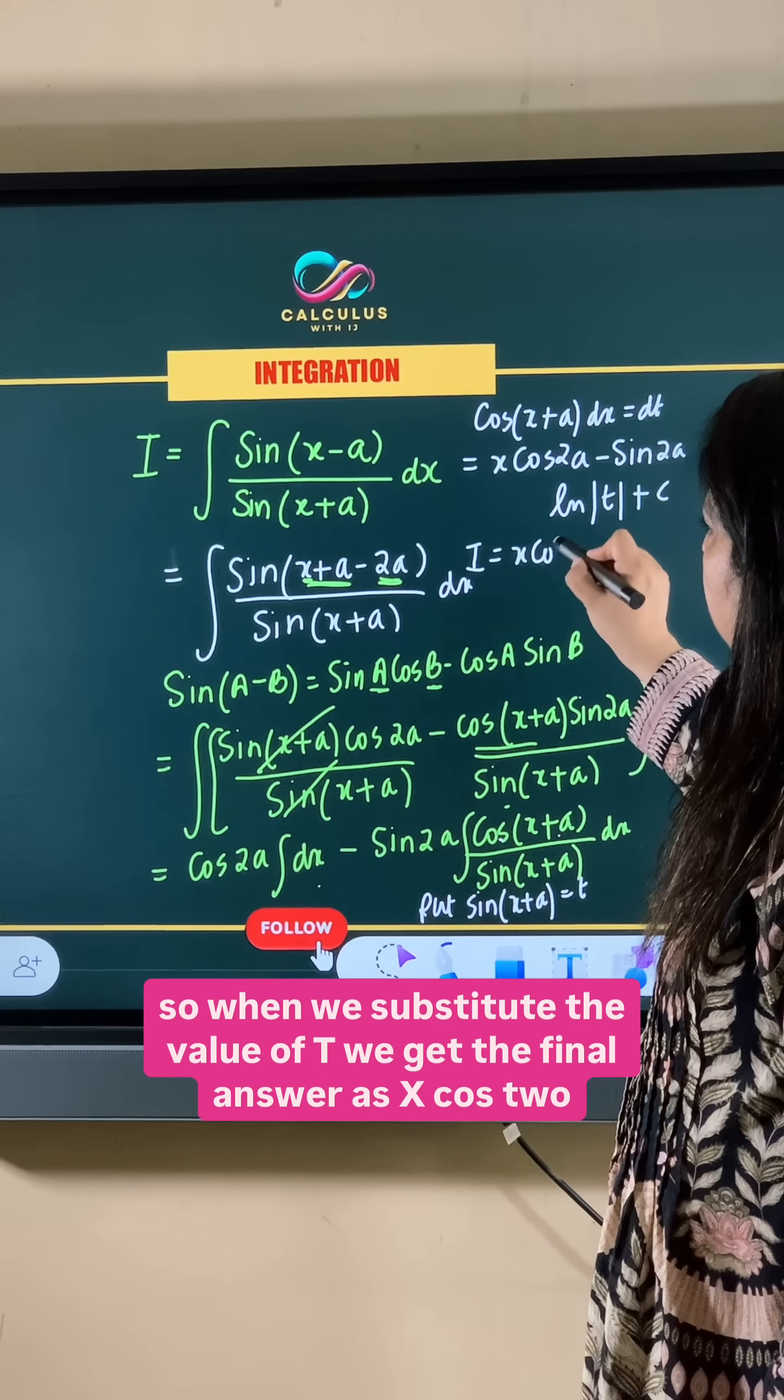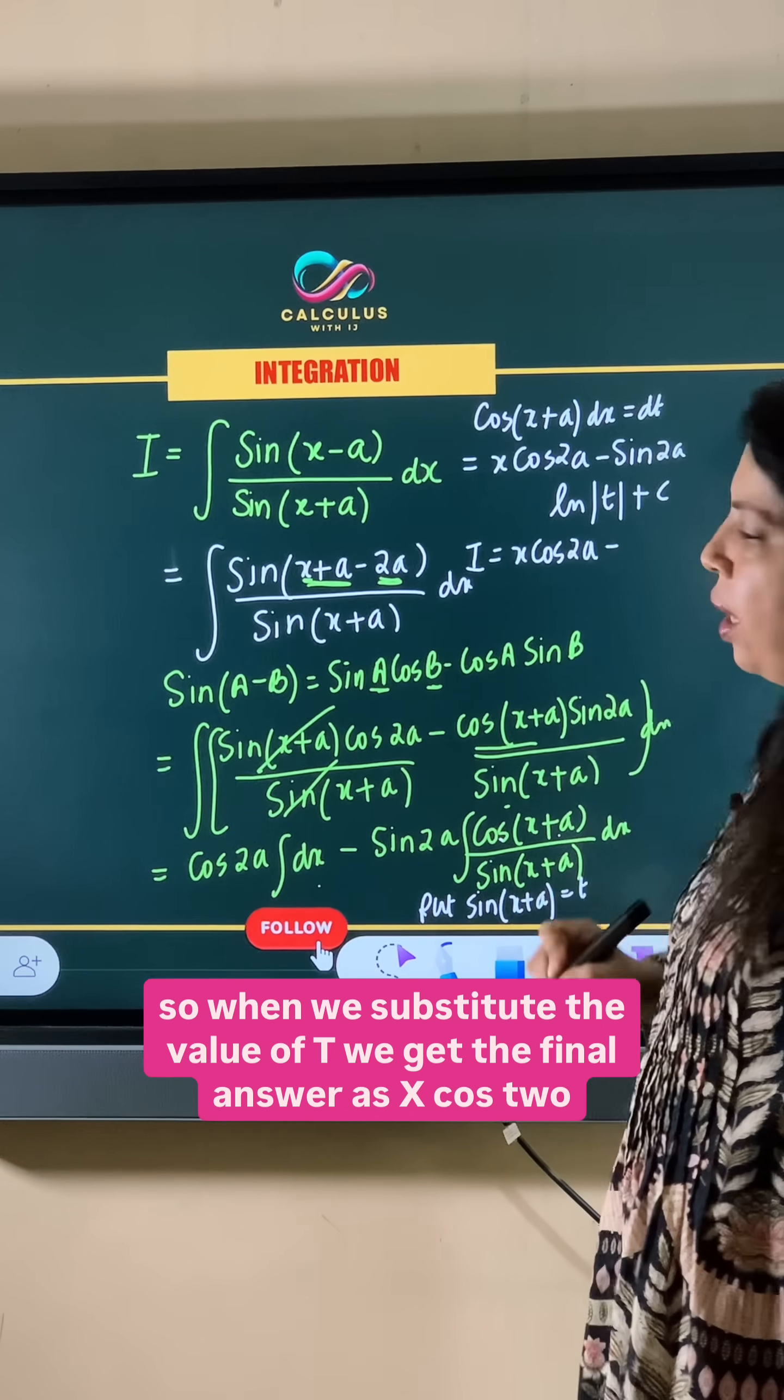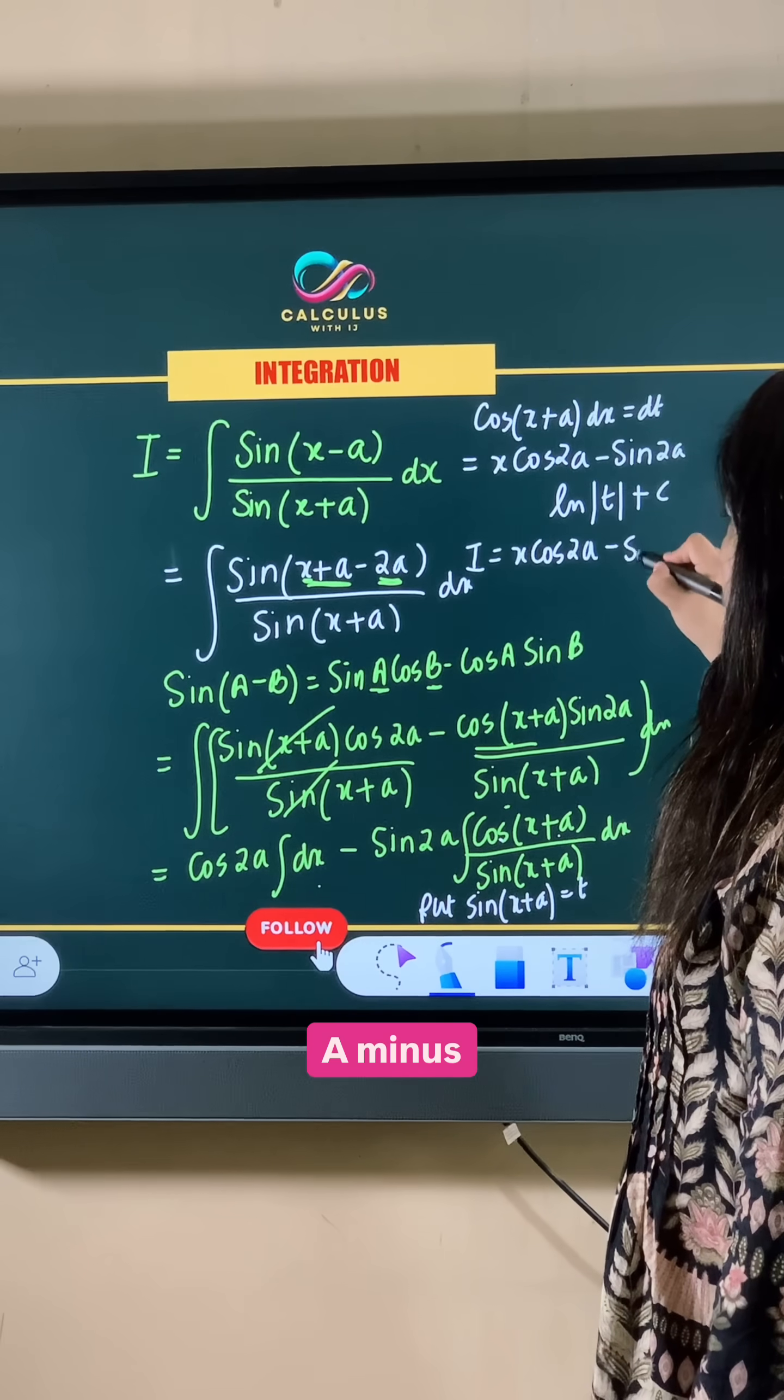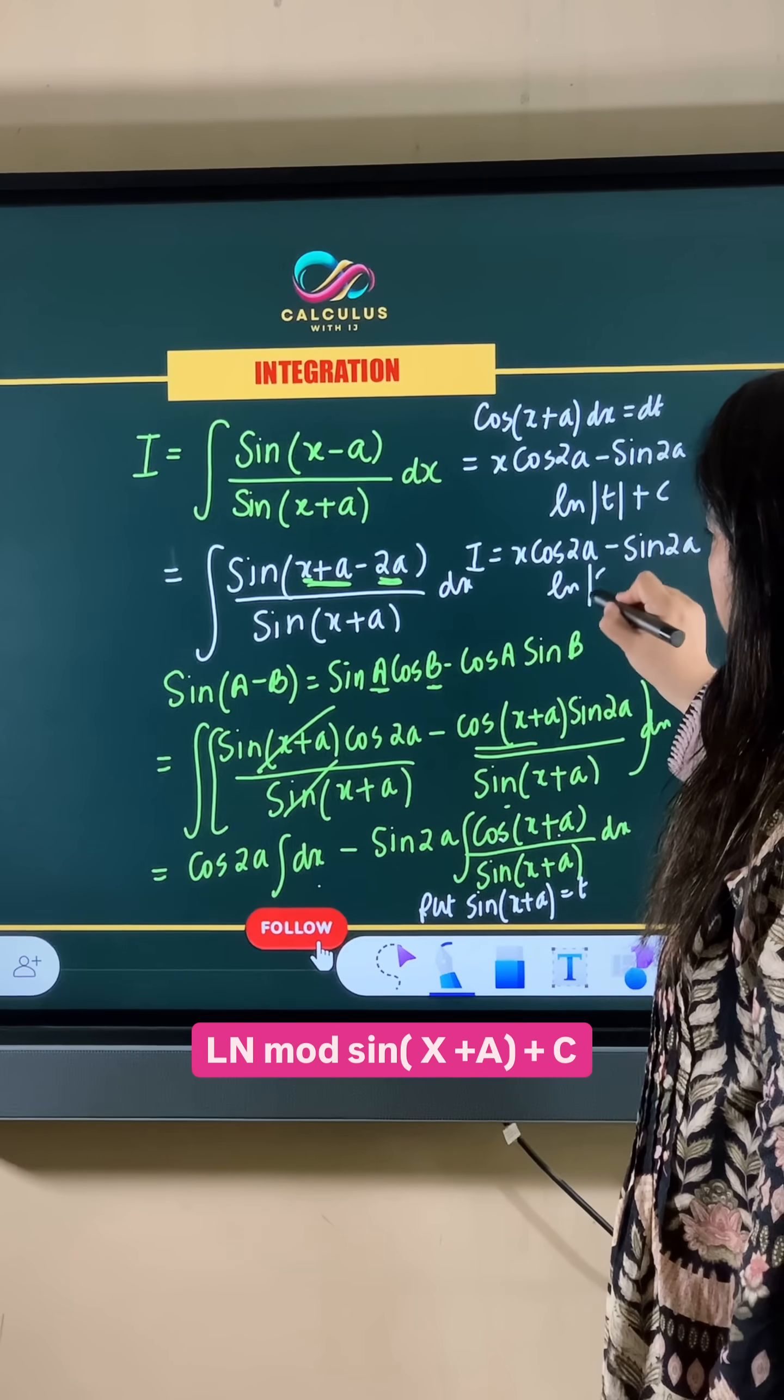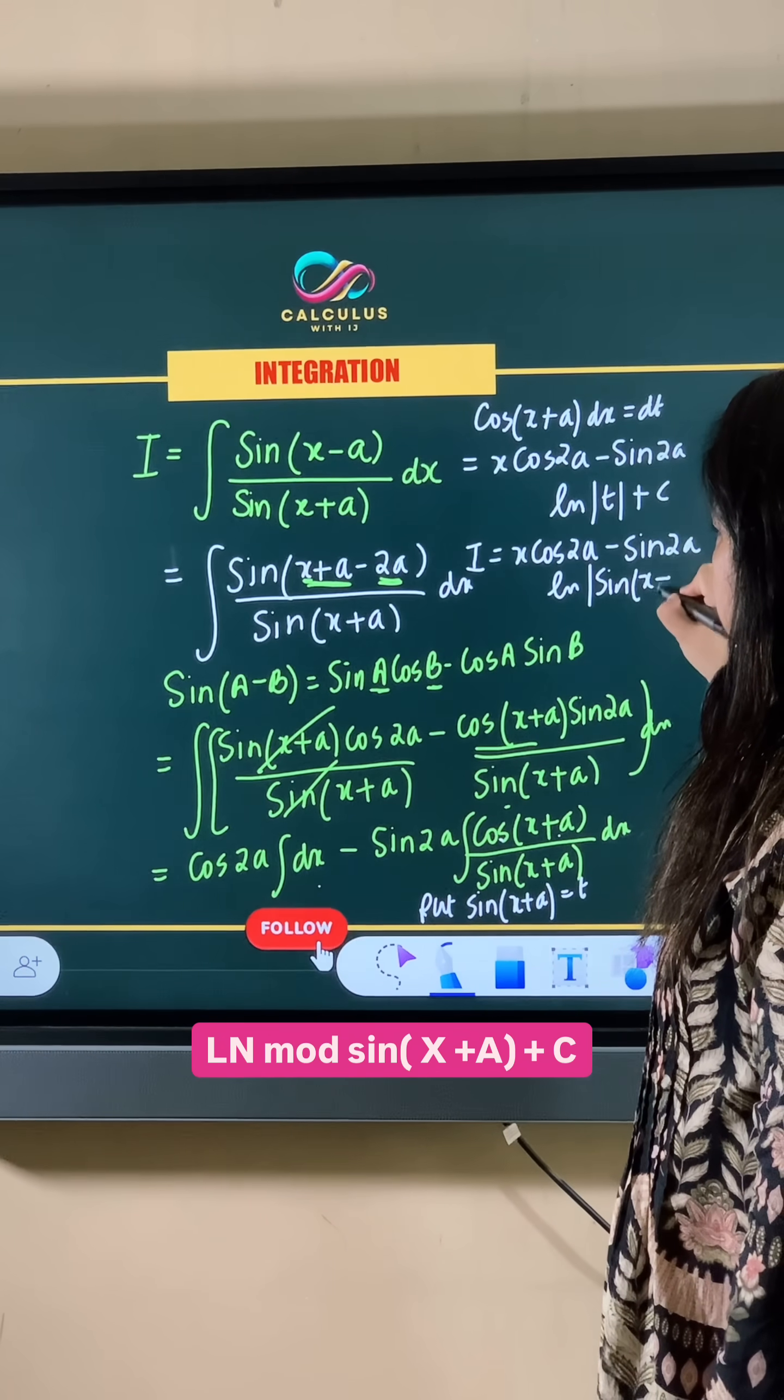So when we substitute the value of t, we get the final answer as x cos 2a minus sin 2a ln mod sin x plus a plus c.